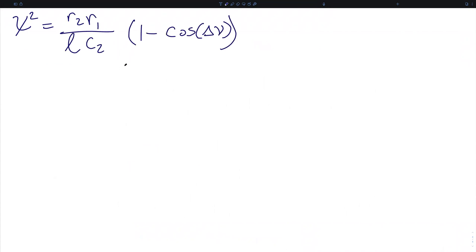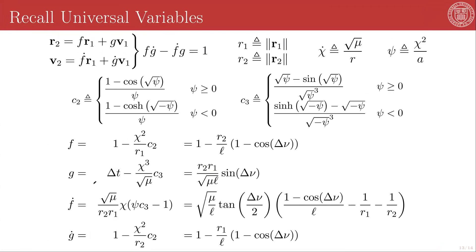We are now going to take this result, chi-squared is equal to r2 r1 over lc2 times the quantity 1 minus cosine of delta nu, and we're going to substitute it back into the f-dot equations as shown here.